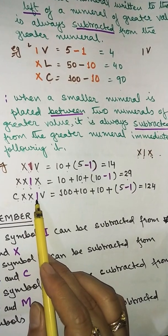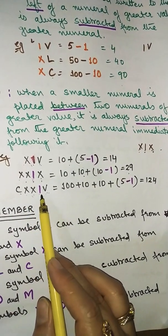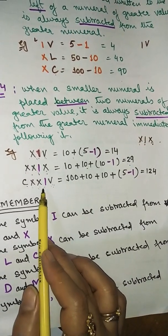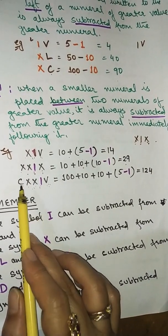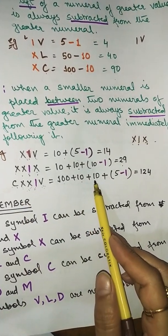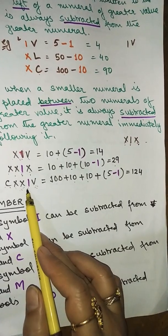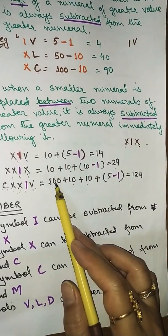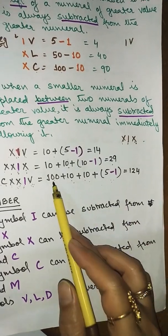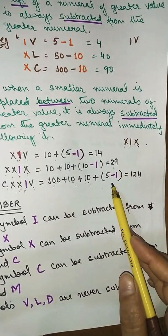For CXXIV: C stands for 100, X and X are 10+10, and I is between V and X. V and X are both bigger than I, so I is subtracted from V giving 5-1=4. So the result is 100 + 10 + 10 + 4 = 124.